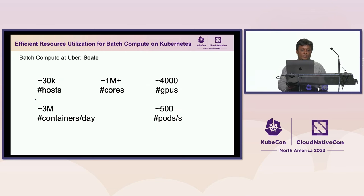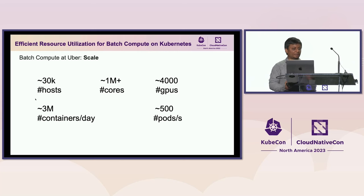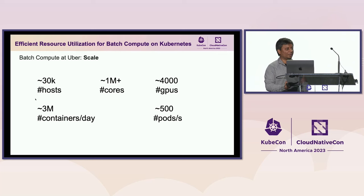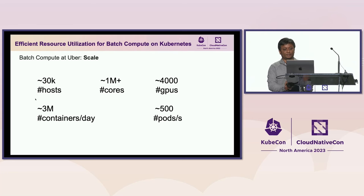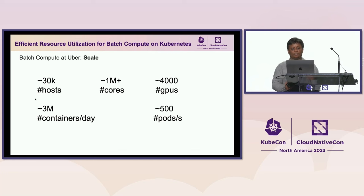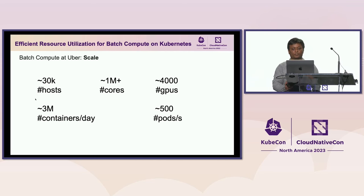Coming to the scale of batch compute at Uber: we have around 30,000 hosts dedicated for batch compute, which results in around 1 million cores. We have also got 4,000 GPUs solving machine learning jobs and AI model trainings. Per day, we launch around 3 million containers for batch workloads, and at peak we go up to 500 pods per second launch rate.